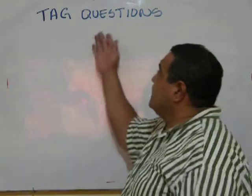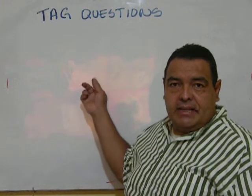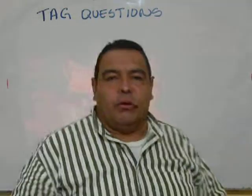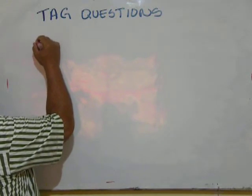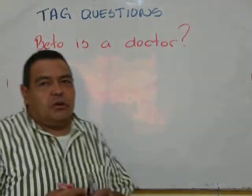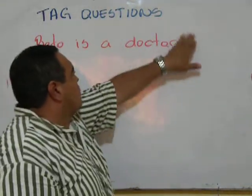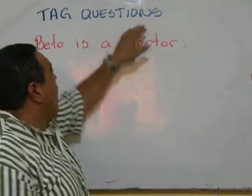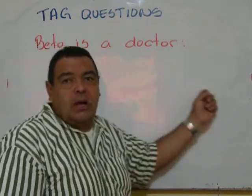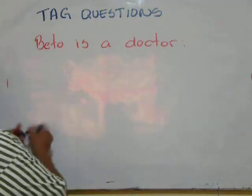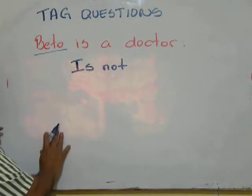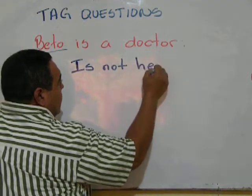I'm going to work on this with the simple present and the future tense. Our next lesson is going to be with the simple past and the present perfect. For now, let me give you a brief example. Beto is a doctor — this is a statement, not a question. Now, how would the tag question go? First of all, if the statement is affirmative, the tag question has to go in a negative expression. So I'm going to say 'Beto is not' — and I'm not going to use Beto, I'm going to use his pronoun, which is 'he.'